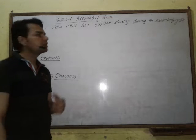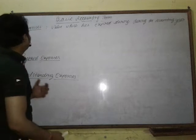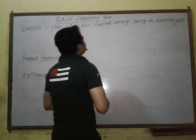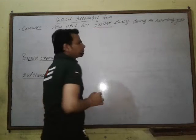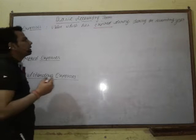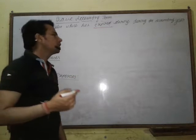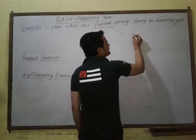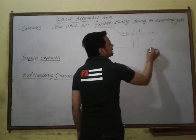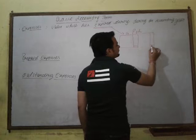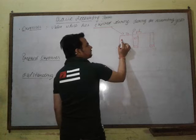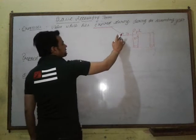Now we are learning the meaning of expenses. Expenses are the value that has expired during the accounting year. These are payments or amounts to be paid — liabilities — which shall be shown on the debit side of the profit and loss account within one accounting year. Examples include salary, wages, commission, and so on.